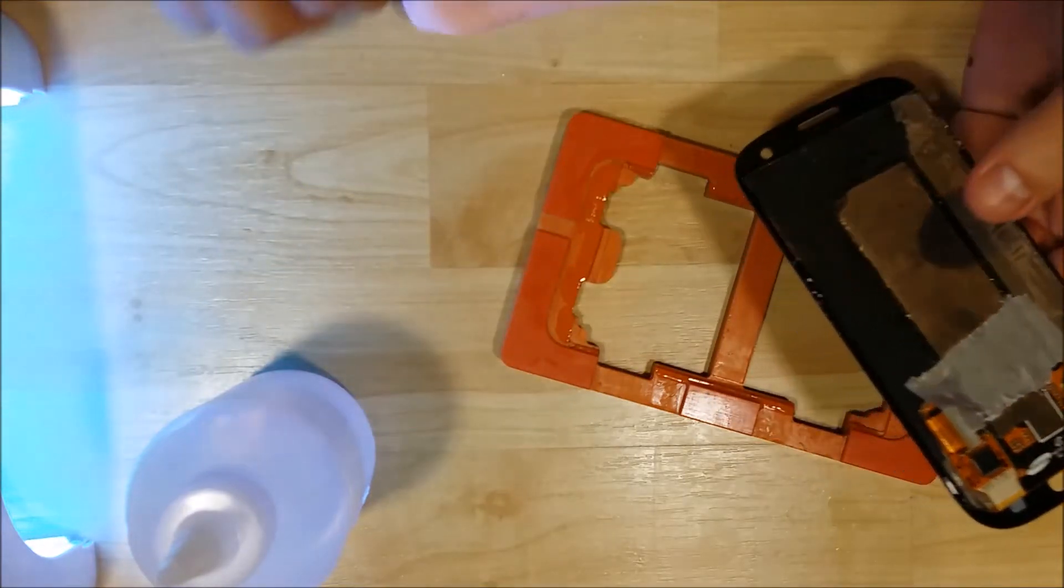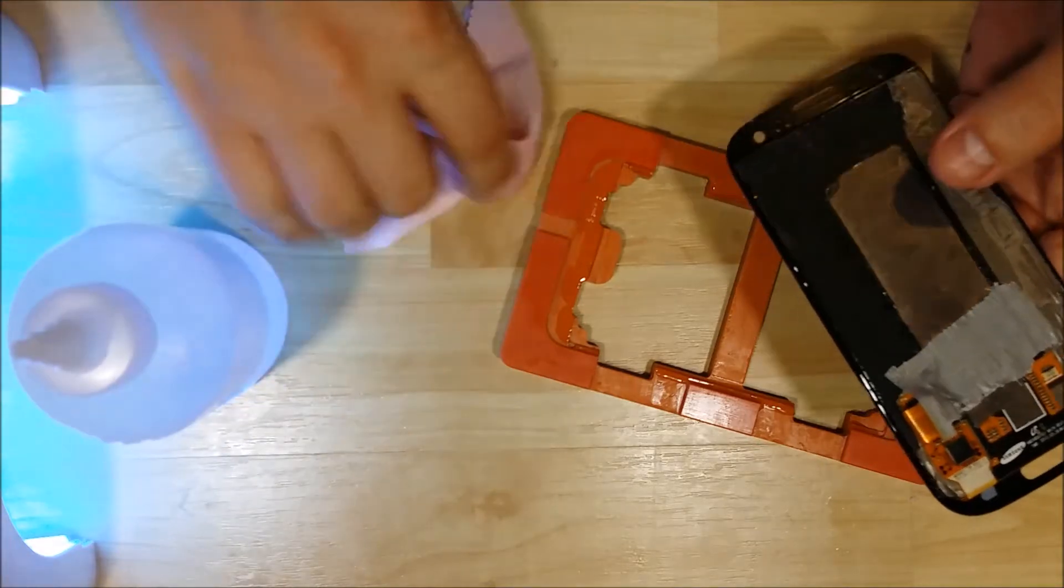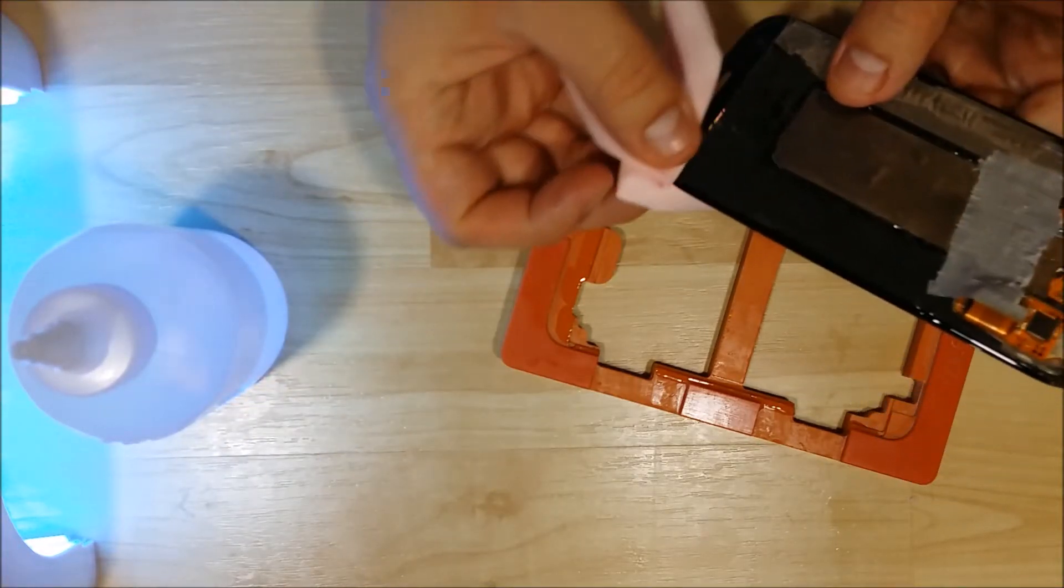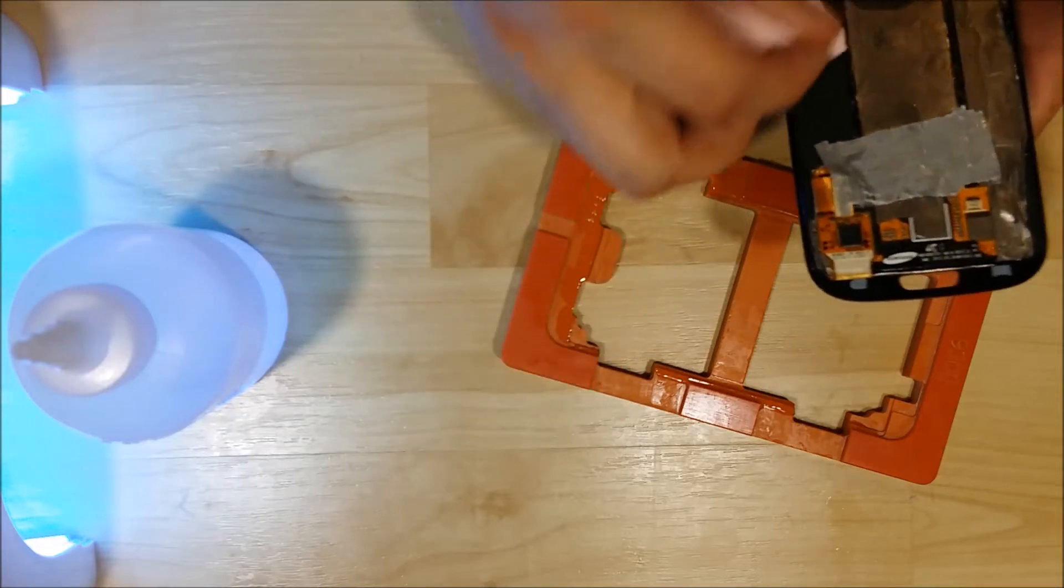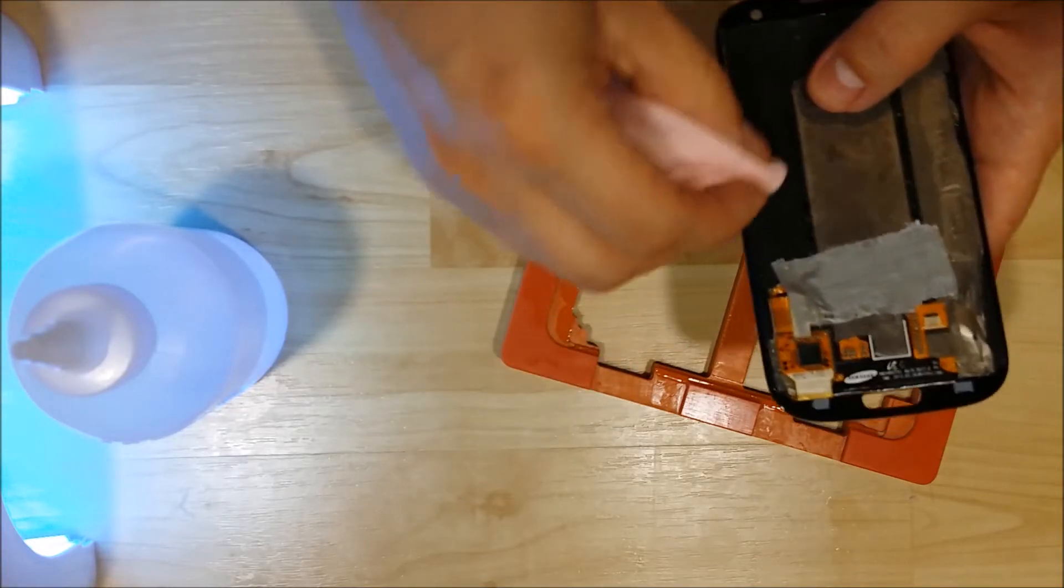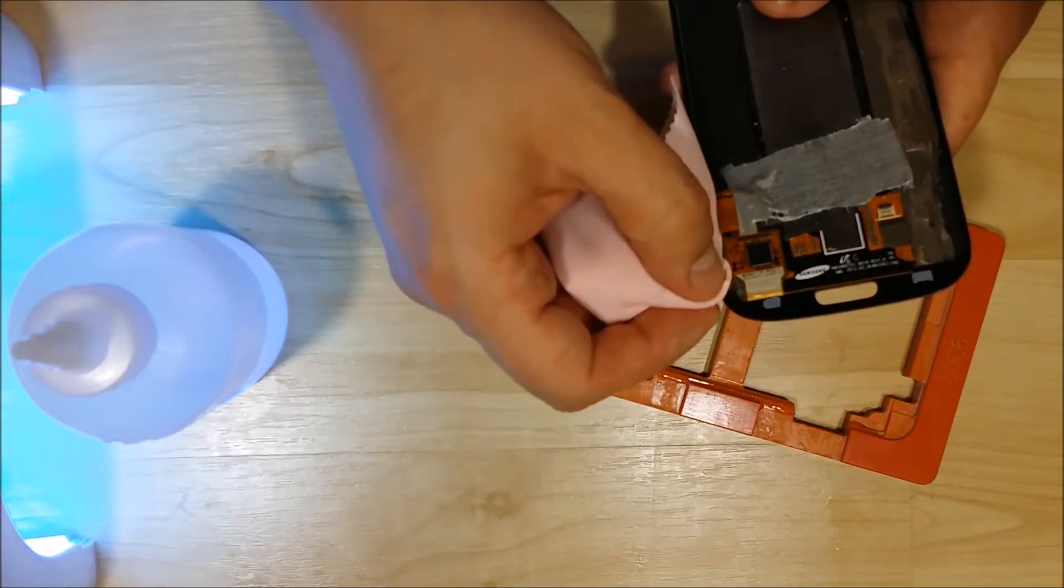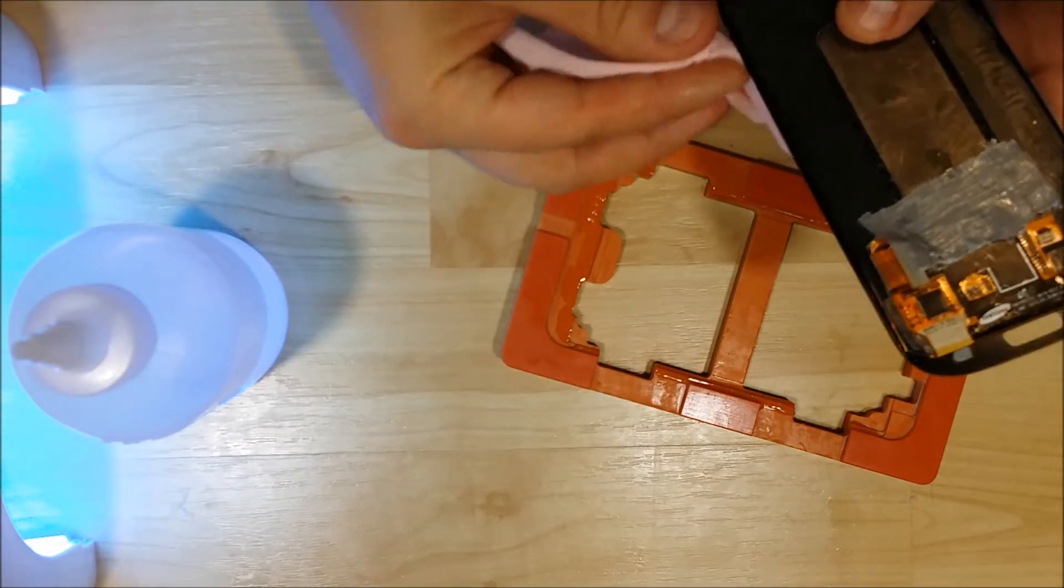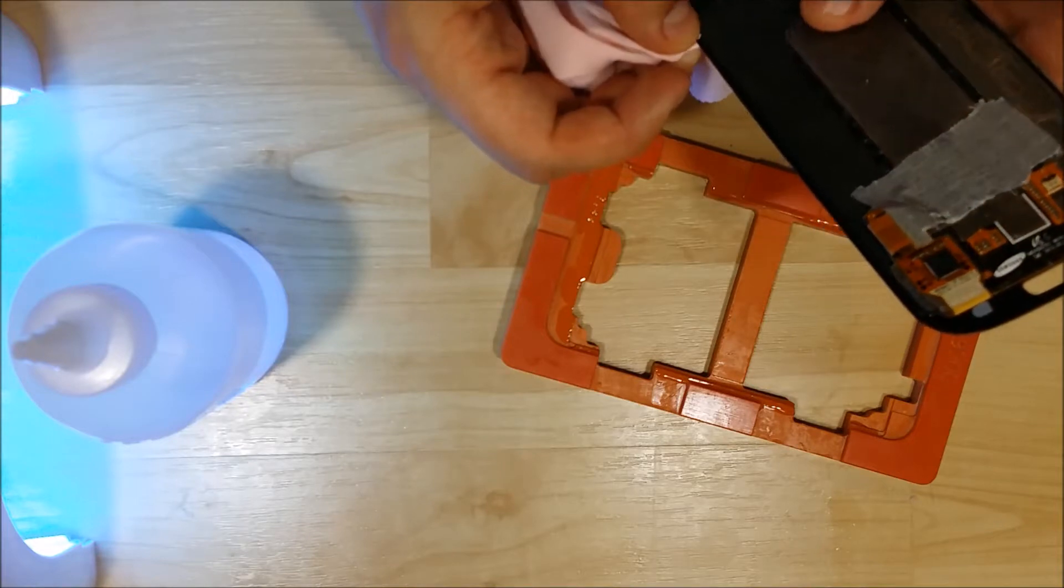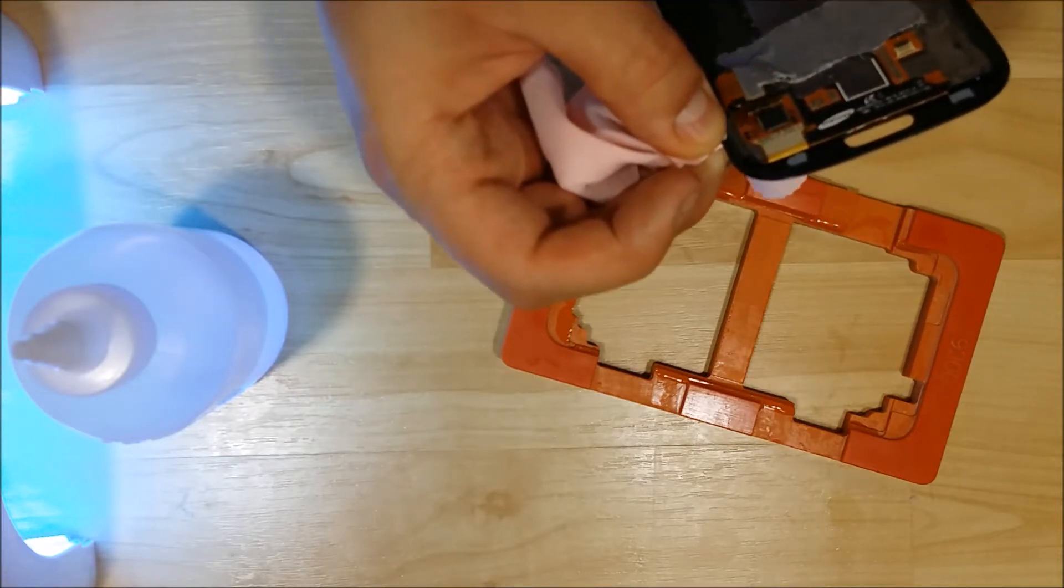You don't want that to happen because if it hits the circuits on the back of the LCD cable there, it could short out your touch functions and your device may stop working. Which is one of the risks you take when doing a liquid optical clear adhesive repair. You want to be diligent in making sure you clean this off. And it's another one of the issues that may come with doing this inside of the phone.